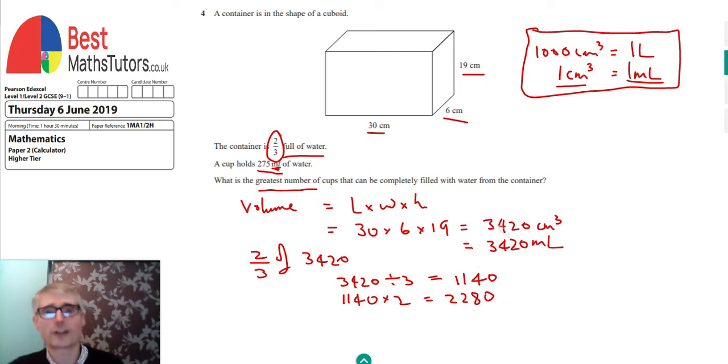You can do all this on a calculator since we're on the calculator paper. That's the number of millilitres of water we have. Since one cup holds 275 millilitres, if we divide this amount by 275, we'll get the number of cups we can fill. 2280 divided by 275 equals 8.29 cups.